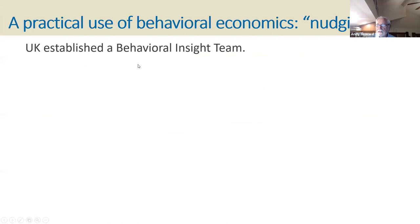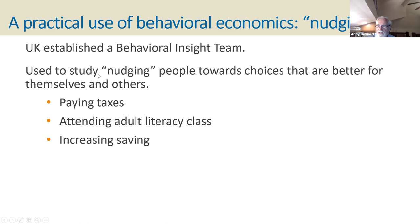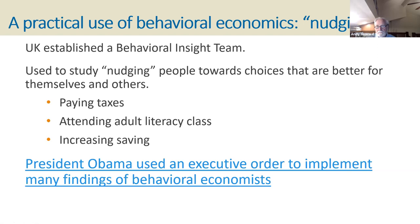In the UK, they established a behavioral insight team to study nudging people toward choices that are better for themselves and others — nudging them through certain kinds of policies around paying taxes, attending adult literacy classes, and increasing savings. They did this by understanding how people really behave, without preaching to them or forcing them — they didn't pass a law saying you have to do this. They gently nudged by using certain kinds of incentives. President Obama used an executive order to implement many of the findings of behavioral economists.